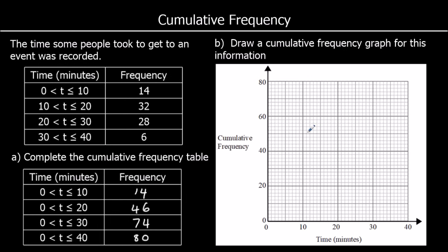Let's plot this on the graph. For cumulative frequency, we're going to plot the top point of the range. So that's 10 minutes against 14 people. Then 20 minutes against 46 people — 46 people took 20 minutes or less to get to the event. Then 30 minutes against 74 people — 74 people took 30 minutes or less. And 40 minutes with 80 people. Again, let's join it up with a smooth curve.